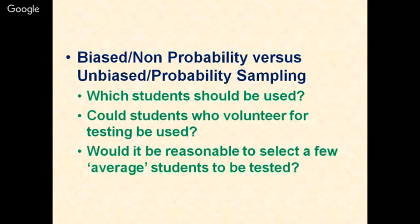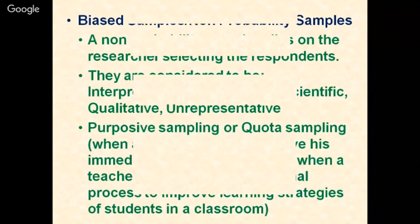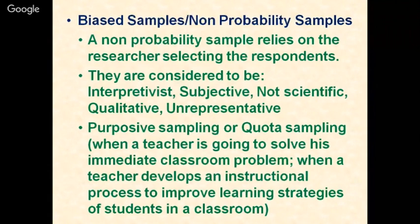There are two broad categories: biased, that is non-probability sampling, and unbiased, that is probability sampling. Questions arise such as: which students should be used? Would students who volunteer for testing be used? Would it be reasonable to select a few average students? You have to consider your objectives, available time, funds, and how quickly you want results. A biased or non-probability sample relies on the researcher selecting the respondents.